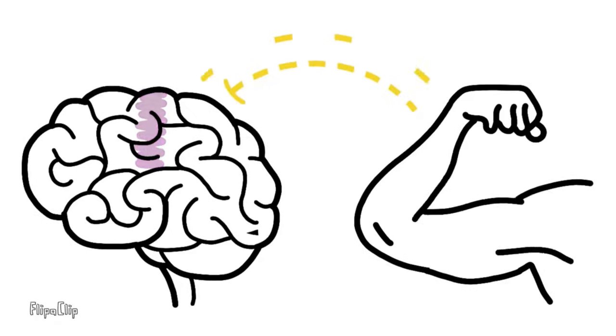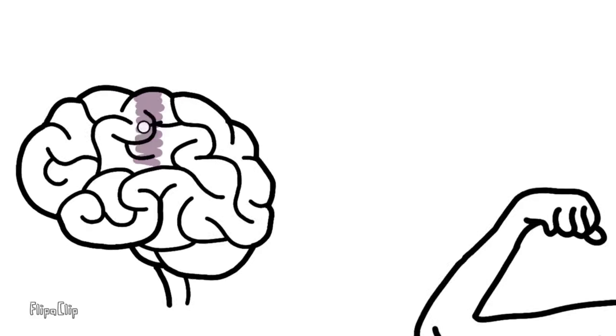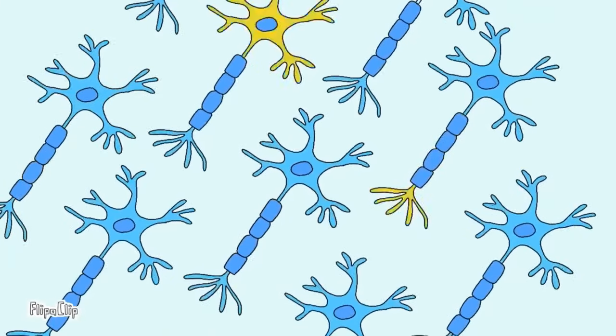This disruption causes gradual loss of mobility and speech. These signals are carried out by specialized messenger cells called neurons.